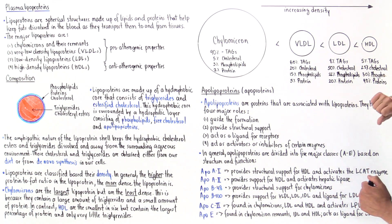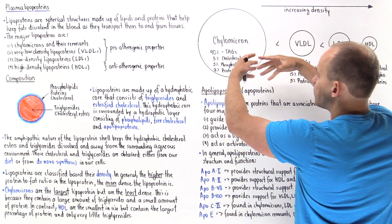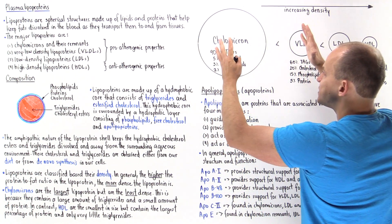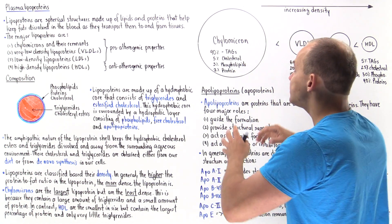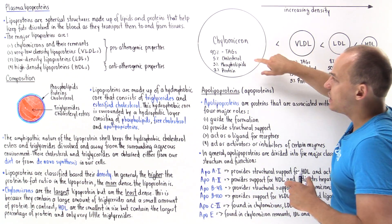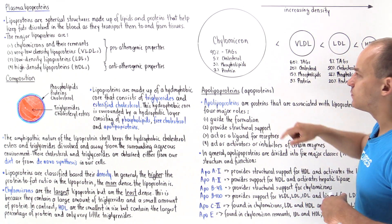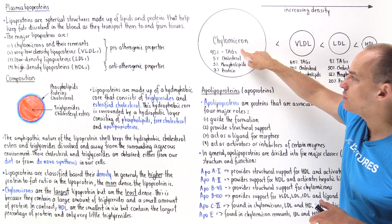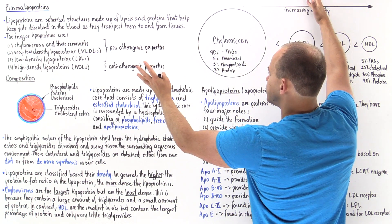As we go from one end to the other, notice that size decreases but density increases. Chylomicrons are part of the exogenous transport pathway and consist predominantly of triglycerides — about 90% of the content is triglycerides, which makes them very large. They have 5% cholesterol (including cholesterol esters and free cholesterol), 3% phospholipids, and only 2% protein. Because the protein-to-triglyceride ratio is very low, chylomicrons are the least dense — they are the largest in size but the least dense.